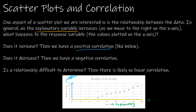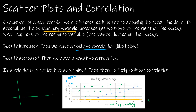If the data were decreasing as we moved right, that would be a negative correlation. Sometimes you'll end up with a scatter plot that shows really no linear correlation at all. You could even find something that makes a parabola — there's clearly a correlation, but it doesn't make a straight line, and therefore it's not a linear correlation.